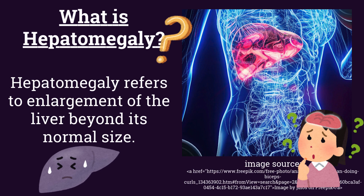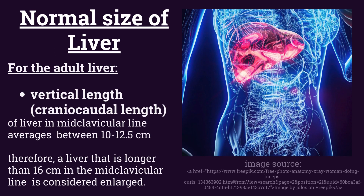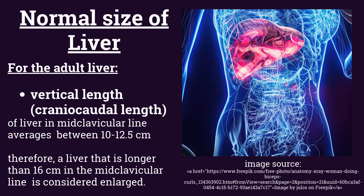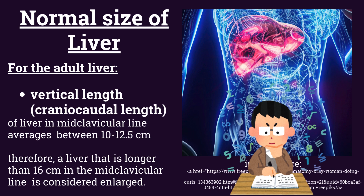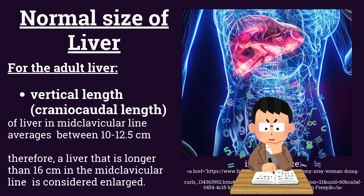What is the normal size of the liver? Normal sizes of the adult liver — in the case of vertical length, also known as craniocaudal length, the vertical length of the liver at the mid-clavicular line averages between 10 to 12.5 centimeters.